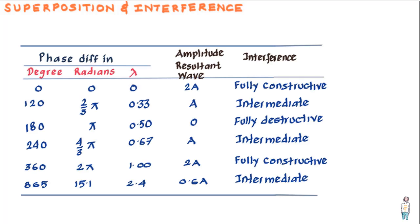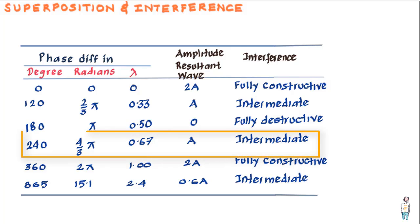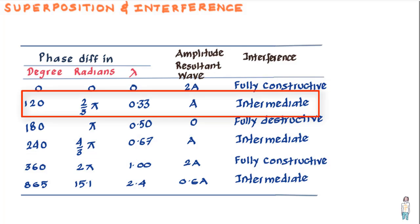We can tabulate phase differences and the interference they create. If interference is neither fully constructive nor fully destructive, it is called intermediate interference. The resultant wave will then have an amplitude between zero and 2a. For example, a phase difference of 120 degrees yields an amplitude of a, which is between zero and 2a. You may like to pause and read this table to absorb its contents.